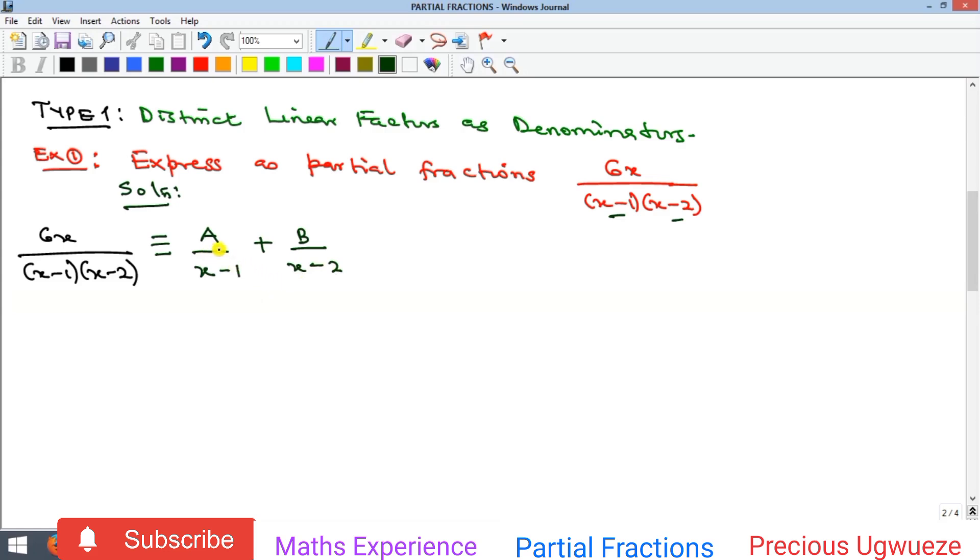Your goal now is to solve for the values of A and B, then substitute them into this, which will give you the partial fractions you're looking for. How do we do this? We'll find the LCM and bring them together so we can cancel equal denominators. The LCM here is (x minus 1)(x minus 2).